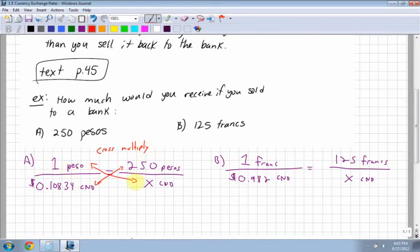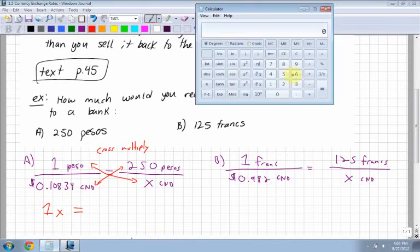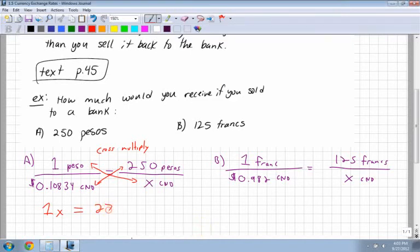So I cross multiply. So one peso times x Canadian dollars is 1x equals 0.10834 times 250 and I get 27.084.